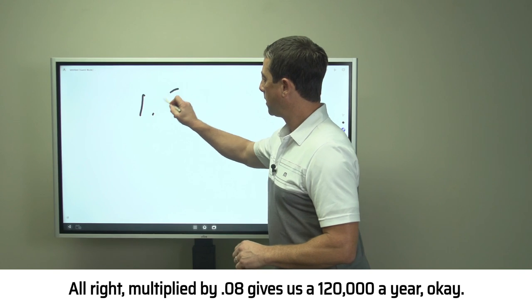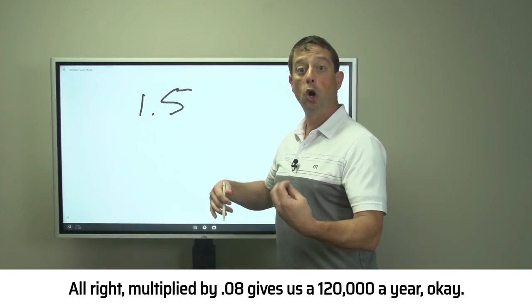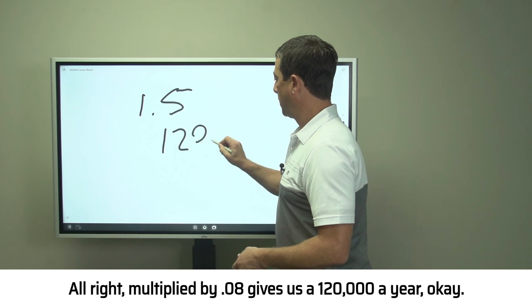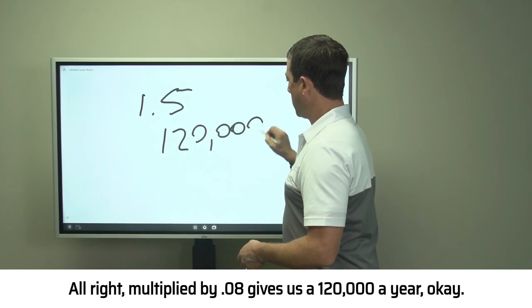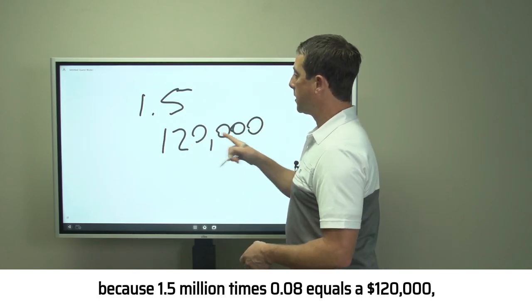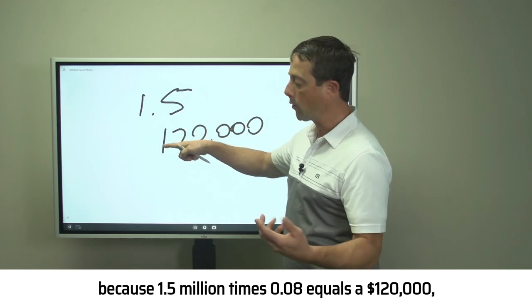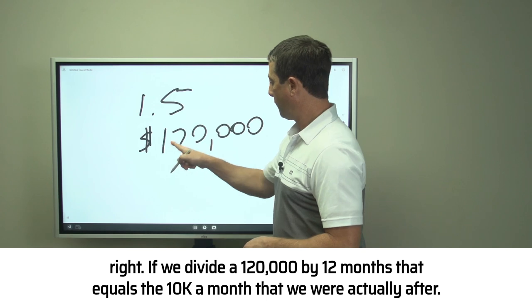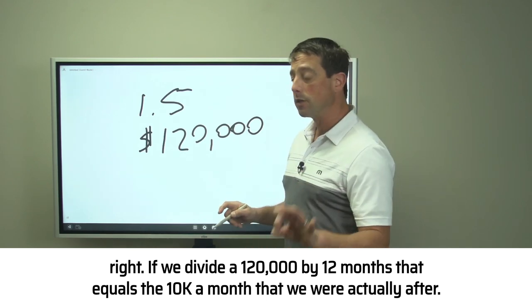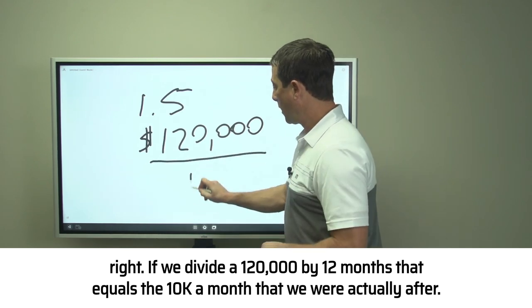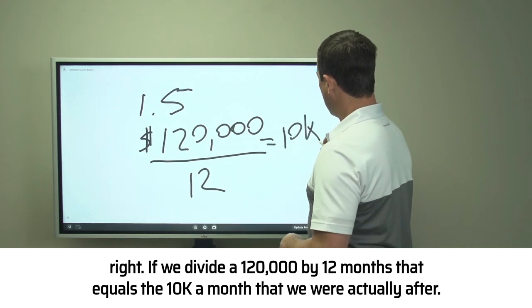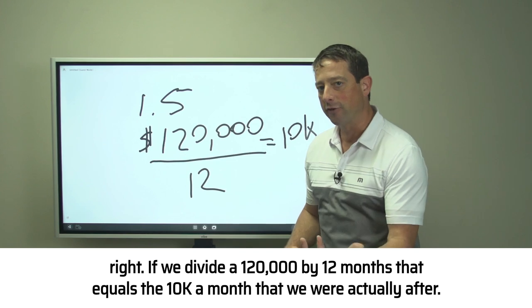1.5 million multiplied by 0.08 gives us $120,000 a year. If we divide $120,000 by 12 months, that equals the $10,000 a month that we're actually after.